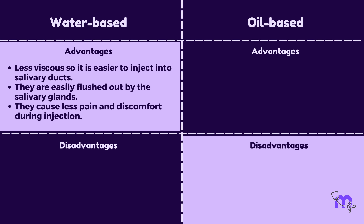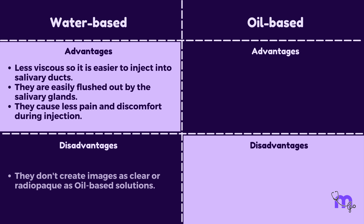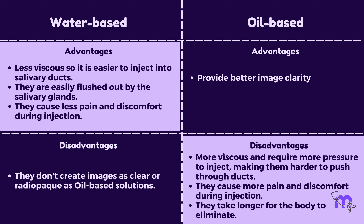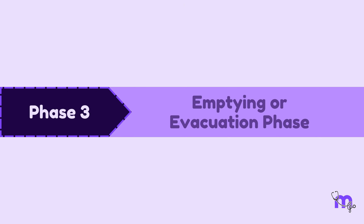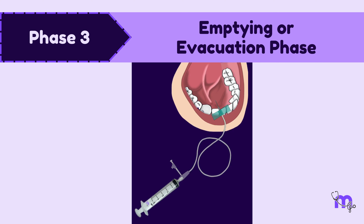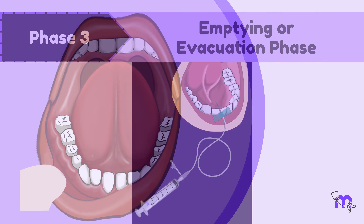Sialography uses two main types of contrast agents: water-based and oil-based. Water-based solutions are less viscous, so they are easier to inject into salivary ducts, are easily flushed out by the salivary glands, and cause less pain and discomfort during injection. The disadvantage is that they don't create images as clear or radio-opaque as oil-based solutions. Although oil-based solutions provide better image clarity, they are more viscous and require more pressure to inject, making them harder to push through ducts, cause more pain and discomfort, and take longer for the body to eliminate.